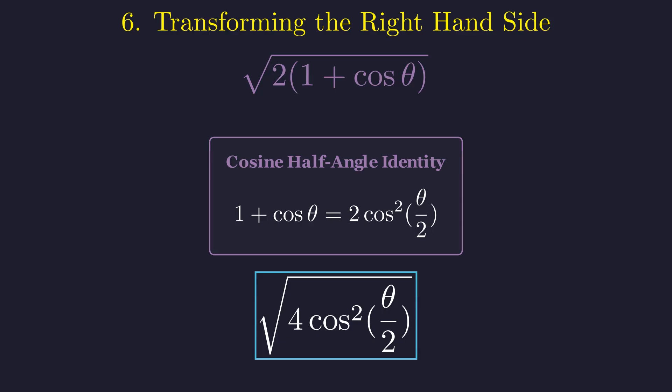Now be careful here. The square root of something squared isn't just that something, it's the absolute value. This becomes 2 times the absolute value of cosine of theta over 2.